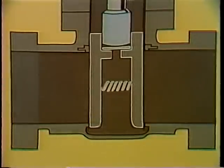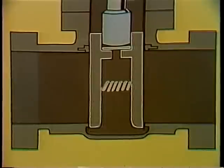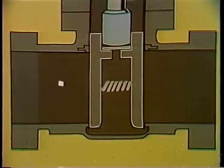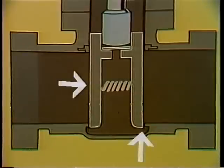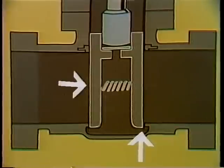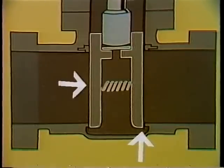Instead of wedging action, the double disk is seated by system pressure. Pressure from the high pressure side causes the disk on the low pressure side to seat tightly. This means it can be used for high temperature applications — the double disk will not jam as its metal expands under increasing temperature conditions.